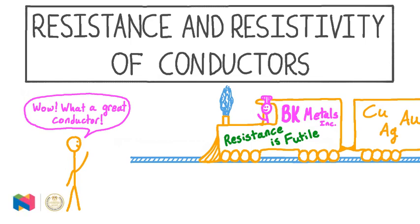In this video, we will learn how the material that makes up a conductor determines its resistivity, mostly due to the structure of its atomic lattice. We will also learn how, in addition to the resistivity of the material, the physical dimensions of the conductor, like its length and cross-sectional area, also affect its resistance. We will first derive a formula that expresses the resistance in terms of the resistivity, length, and cross-sectional area, and then explain the physics behind each of these quantities.